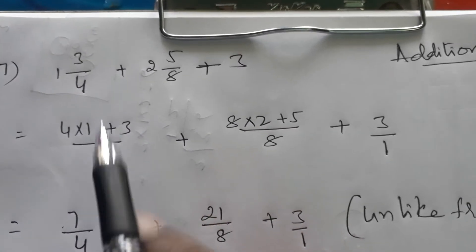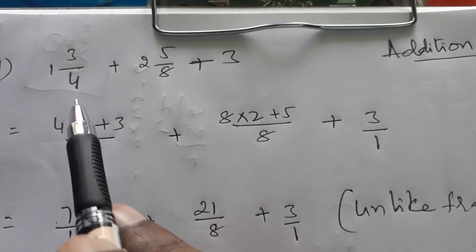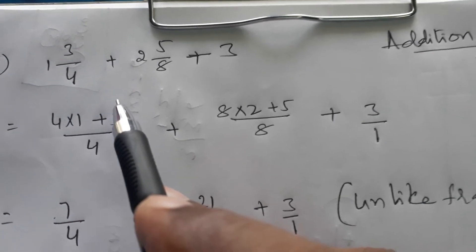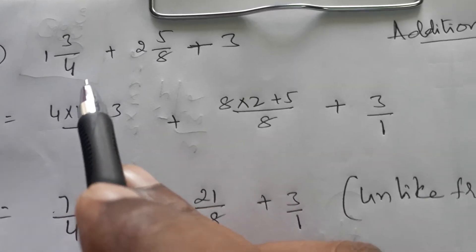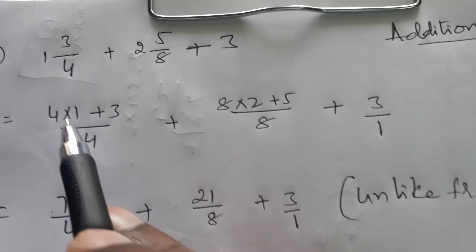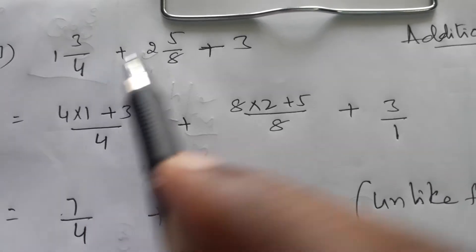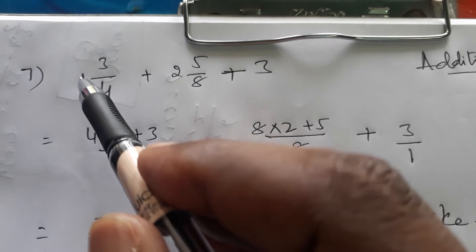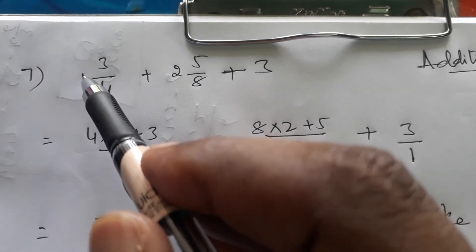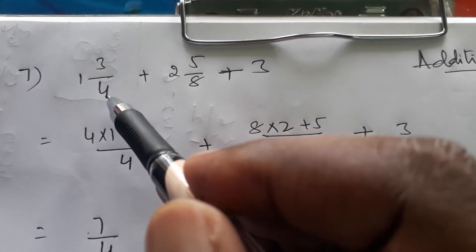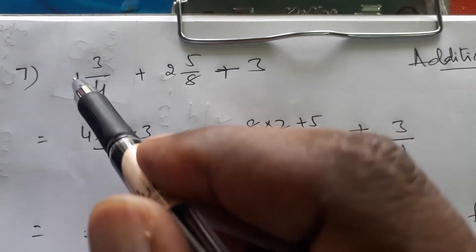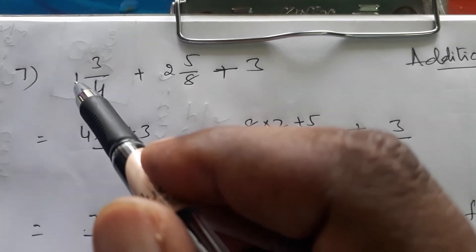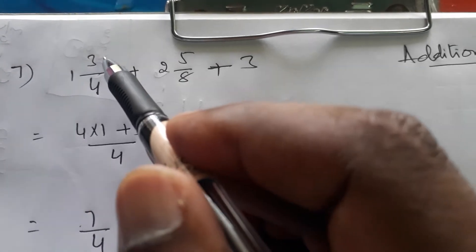We should not do addition directly with mixed fractions. So what to do? Whatever mixed fractions are given, convert them into normal fractions. To convert into normal fractions, multiply the denominator and the whole number — these two multiply. 4 × 1 = 4, and for that result add the numerator.